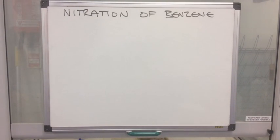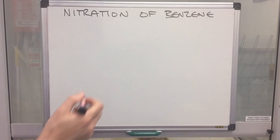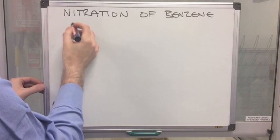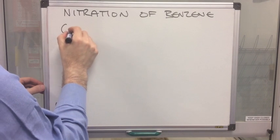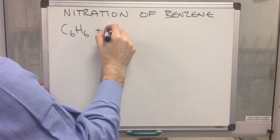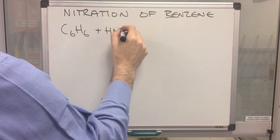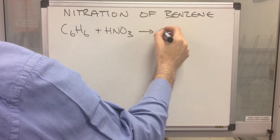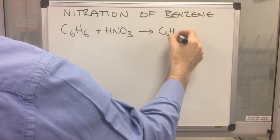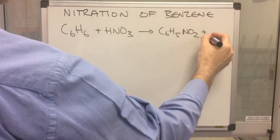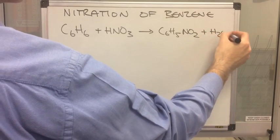In this video I'm going to look at the nitration of benzene. So we'll start with the overall equation for the reaction. Benzene is C6H6 and it's reacting with nitric acid HNO3. And that would produce C6H5NO2 and H2O.